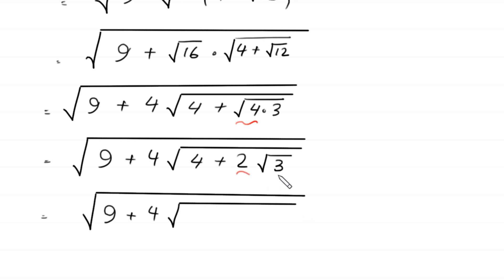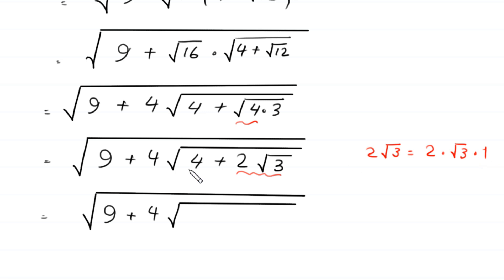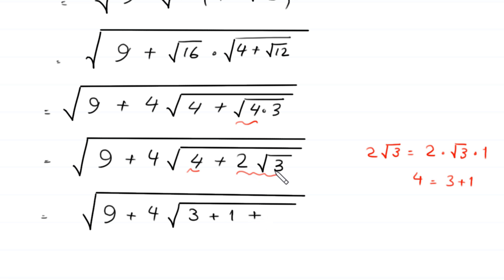Now, this 2 times square root of 3 can be written as 2 times square root of 3 times 1. So we write this 4 as 3 plus 1, and we include this 2 times square root of 3.